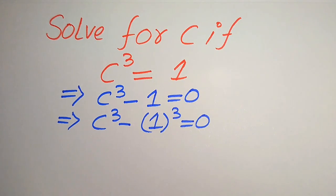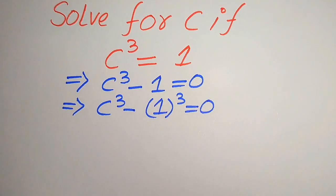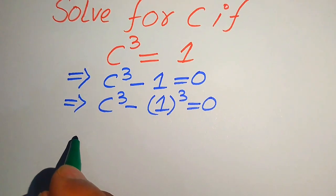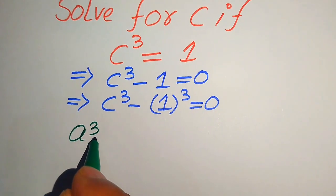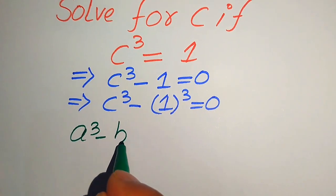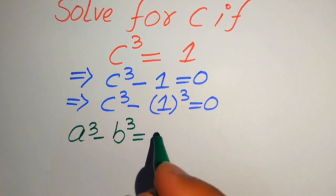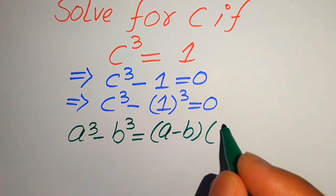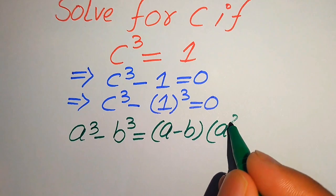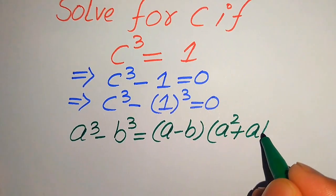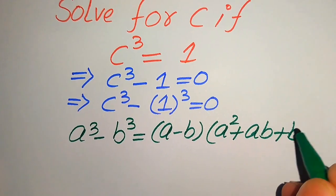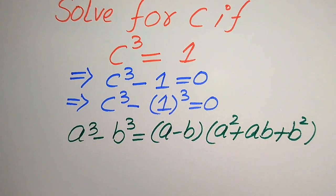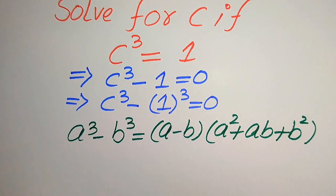After this step we need to use the nice cubic formula. You know about the cubic formula: if we have a cubed minus b cubed, it is equals to a minus b times a squared plus a·b plus b squared. We need to use this formula.